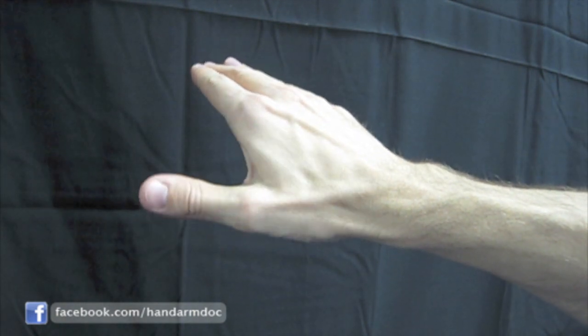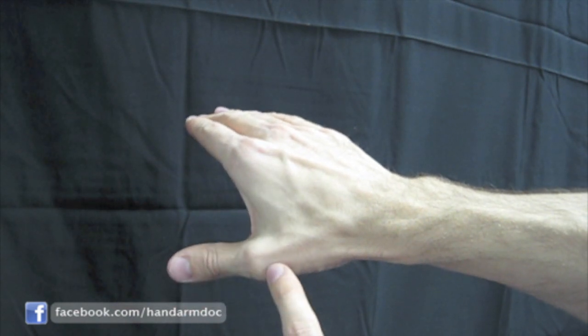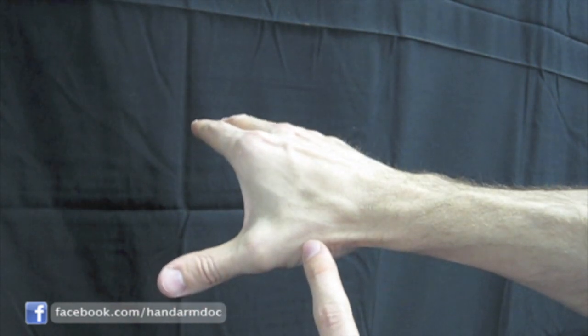The tendons involved in this particular tendonitis run from the middle of the thumb across the thumb base and across the wrist into the forearm.